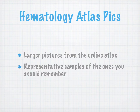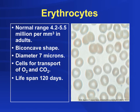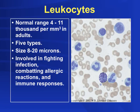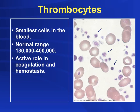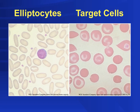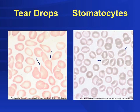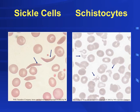Hematology atlas pictures — these are larger images from the online atlas and are representative samples of the ones you should remember: red blood cells, white blood cells, thrombocytes or platelets, elliptocytes, target cells, teardrop cells, stomatocytes, sickle cells, and schistocytes.